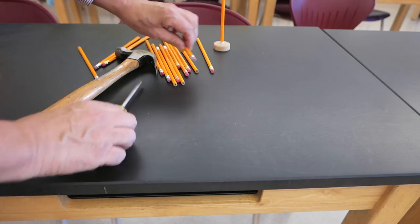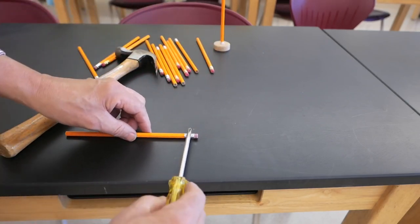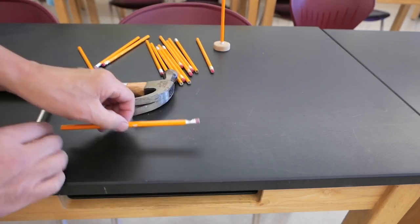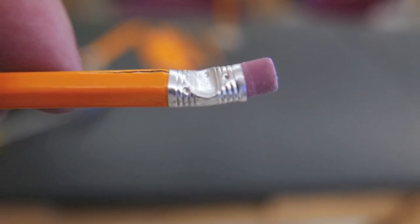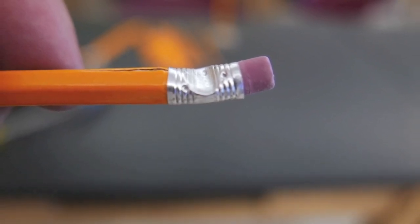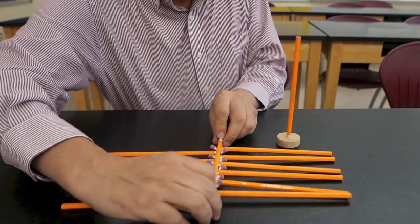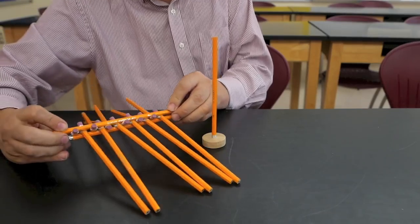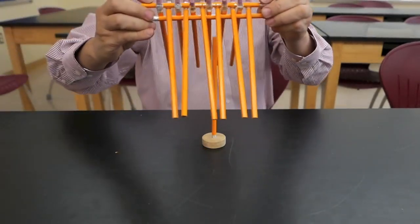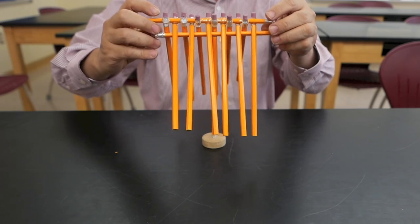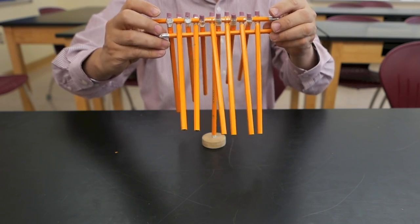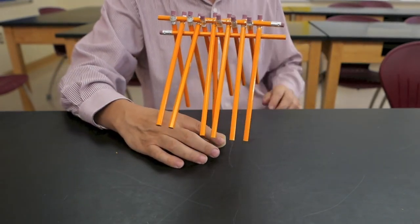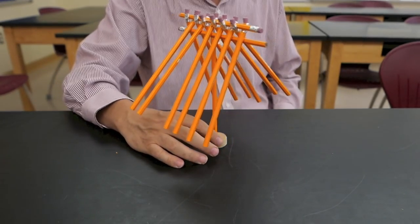And I'm going to do that by laying the pencil on the table, placing a screwdriver on top of it, and then tapping it with a hammer. That's going to make a dent in the metal ferrule of the pencil, and that's going to be able to catch on the top pencil and hold it in place.